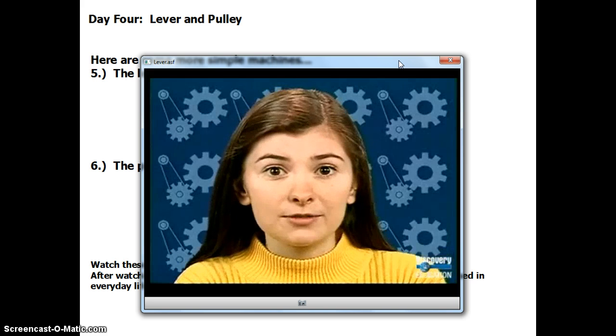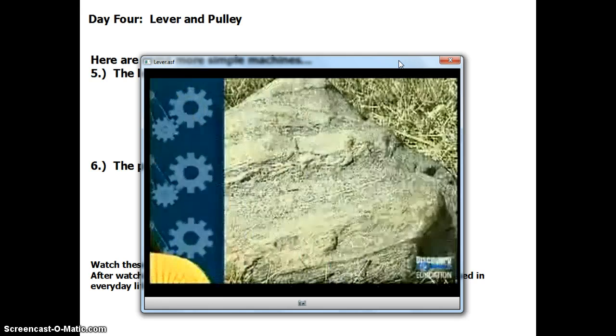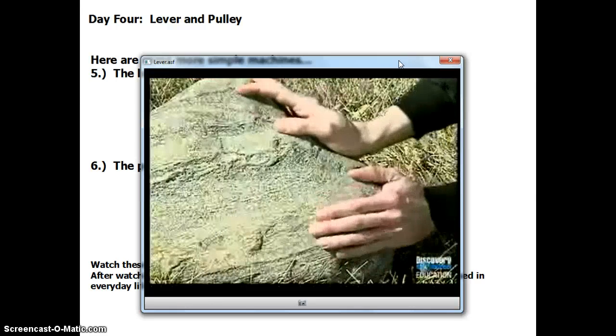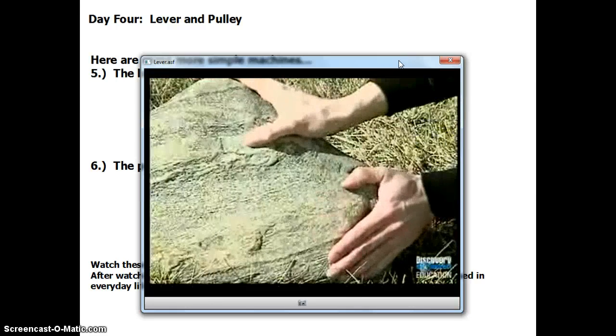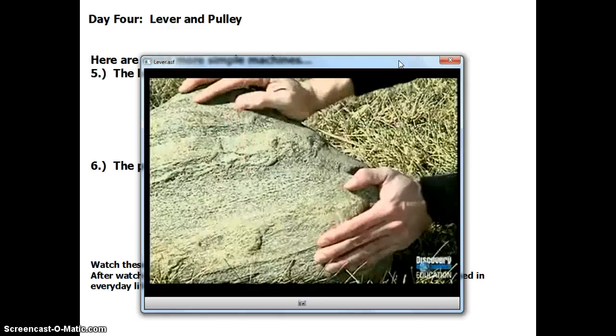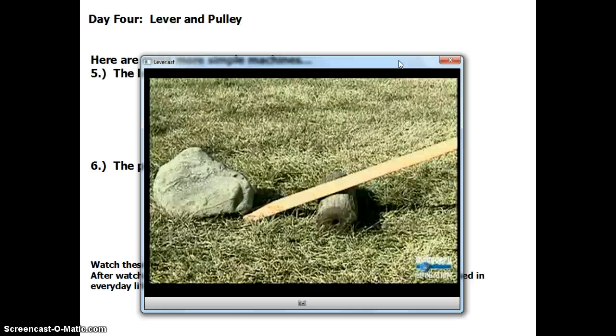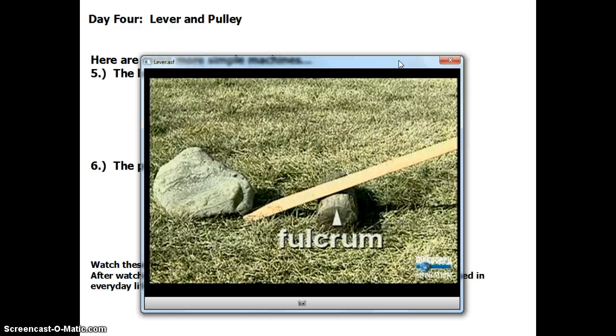Let's say you want to move this large rock. You can push it, but this rock is too heavy. To make it easier, you can use a lever. All levers have three parts. The first part is the object that is to be moved, called the load. You also need a fulcrum. That's the fixed point where the bar can rock back and forth.